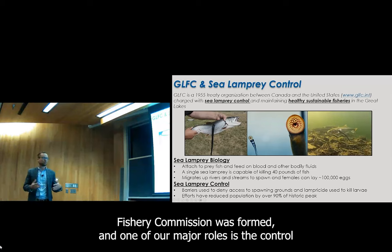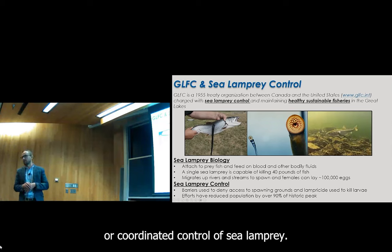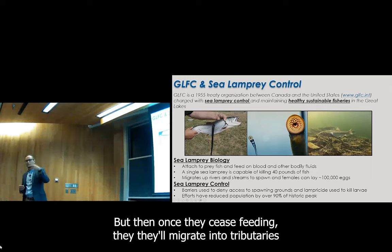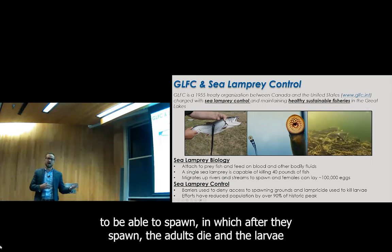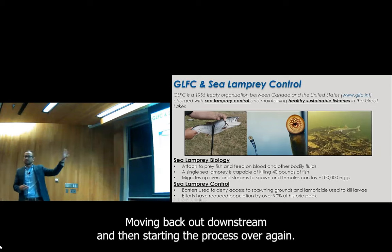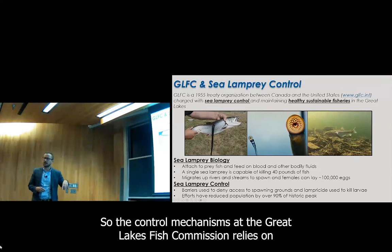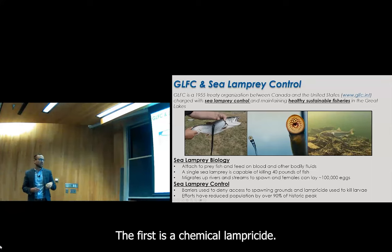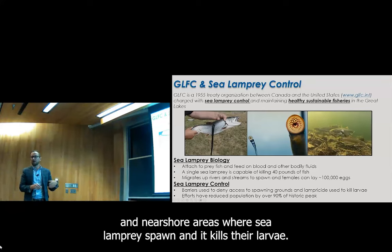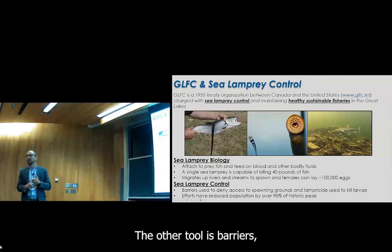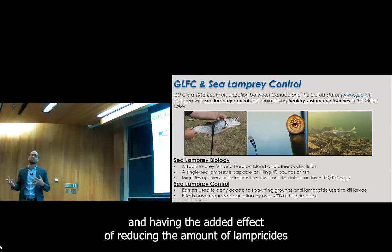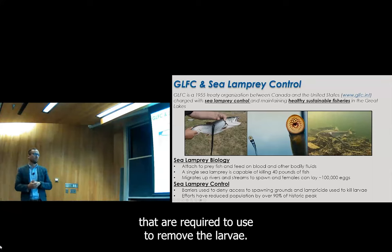One of our major roles is the coordinated control of sea lamprey. The adults live out in the Great Lakes and feed on fish, but once they cease feeding, they migrate into tributaries to spawn; after spawning, the adults die, and the larvae stay in those tributaries for three to four years before metamorphosing, moving back downstream, and starting the process over again. The control mechanisms rely on two tools: the first is a chemical lampricide — a near species-specific chemical applied to tributaries where sea lamprey spawn that kills their larvae. The other tool is barriers, which prevent sea lamprey from accessing those tributaries and reduce the amount of lampricide required.